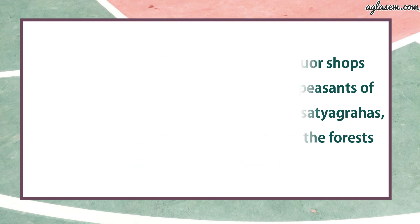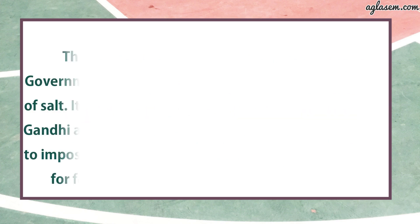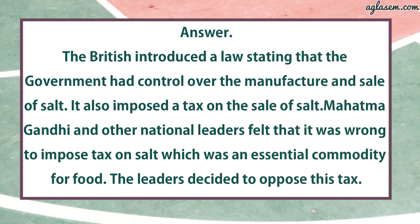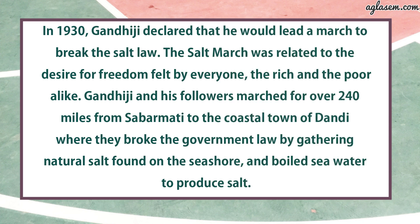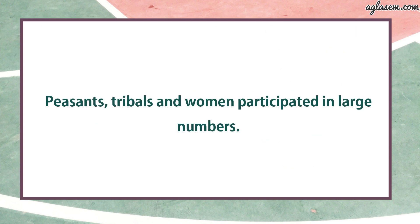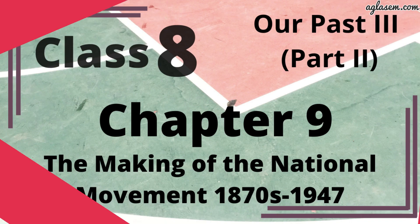Question number eight: Why did Gandhi choose to break the salt law? The British introduced a law stating that the government had control over the manufacture and sale of salt, and also imposed a tax on its sale. Mahatma Gandhi and other national leaders felt it was wrong to impose a tax on salt, which was an essential commodity. In 1930, Gandhi declared he would lead a march to break the salt law. Gandhi and his followers marched over 240 miles from Sabarmati to the coastal town of Dandi, where they broke the government law by gathering natural salt found on the seashore and boiling sea water to produce salt. Peasants, tribals, and women participated in large numbers.